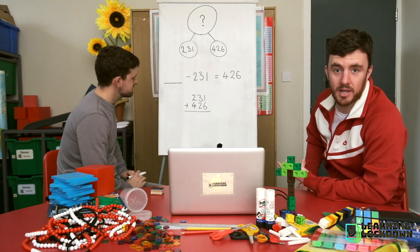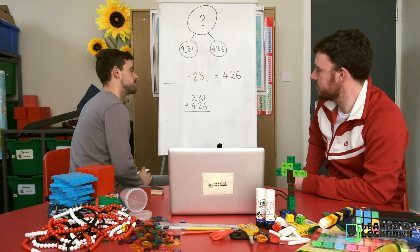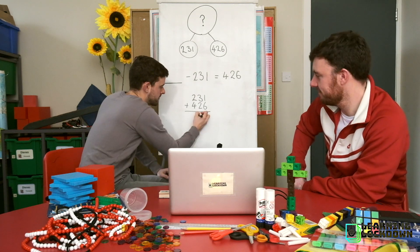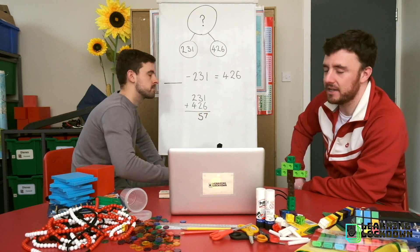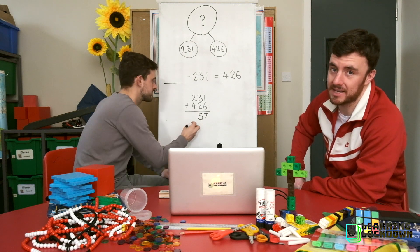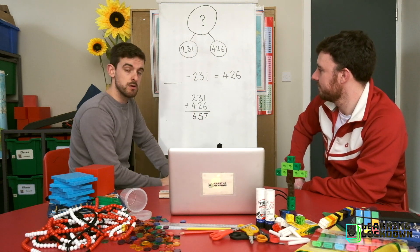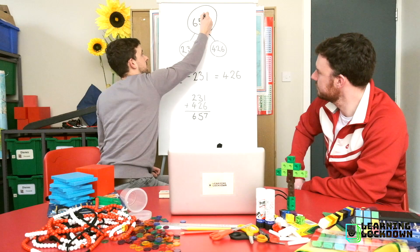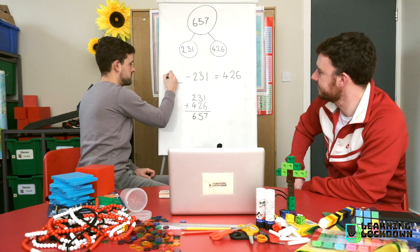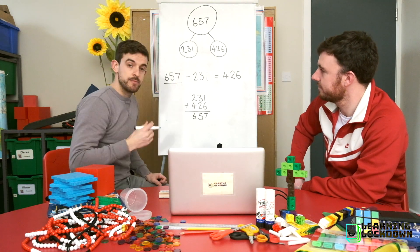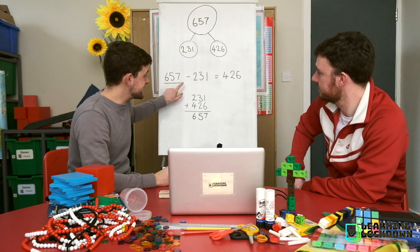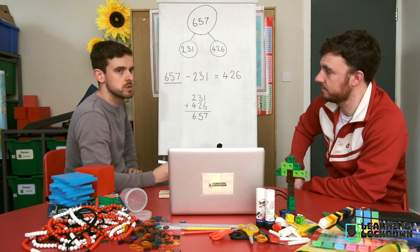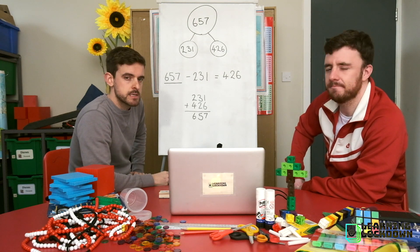So, now we can do our simple addition. We start with the ones. We've got 1 plus 6, which we know is 7. We've got 3 lots of 10 plus 2 lots of 10, which we know is 5 lots of 10. And finally, we've got 2 lots of 100 plus 4 lots of 100, which we know makes 6 lots of 100. So, our whole was 657. And remember, if you want to check this, do 657, take away 231, and see if you end up with 426. If you do, the numbers were all correct. Should we do one more example? One more example. Let's do one more.